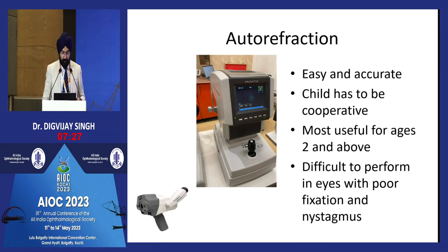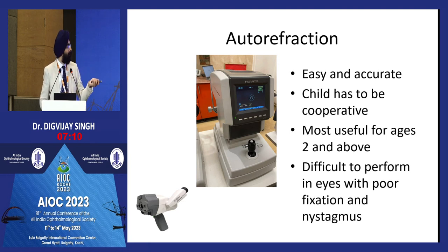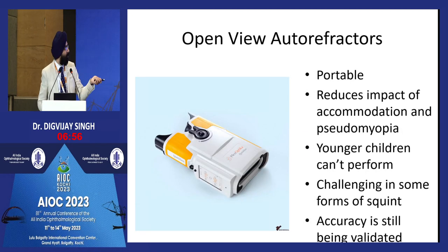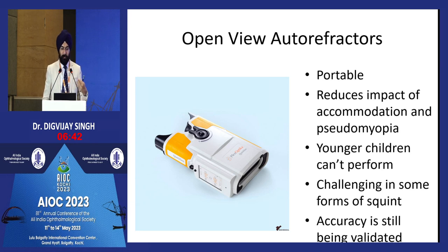Open-view autorefractors allow the child to look at a far distance object while holding the device, but require a slightly older cooperative child and must be done uniocularly in strabismus cases. Regarding cycloplegia: refraction in a child should never be done without it. For children below age five or with esotropia, atropine is the cycloplegic of choice. Cyclopentolate is an alternative close to atropine but can cause irritability, incomplete cycloplegia, and accommodation effects.